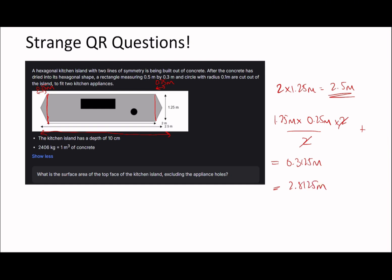So 1.25 times 0.25, which becomes 0.3125m. So add these two values together and you get 2.8125m squared. And then we've got to subtract the rectangle and the circle. So the area of the rectangle is going to be 0.5 times 0.3, which is 0.15m squared. And the area of the circle is simply pi r squared, which is 3.14 times 0.1 times 0.1, which if I put into my calculator gives me 0.0314.